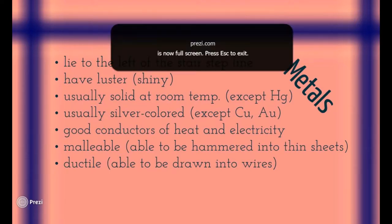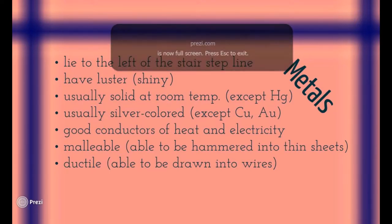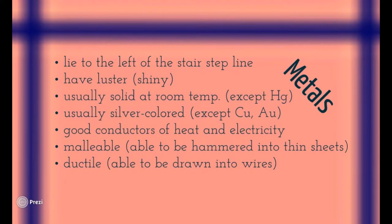All metals are solid at room temperature, which is funny — except for mercury. Mercury is the only liquid metal we have. All the other metals are tough and solid. Most of them are usually silver-colored, which is kind of crazy, but there are only a few that are not silver-colored. Copper, for example — what color is copper?